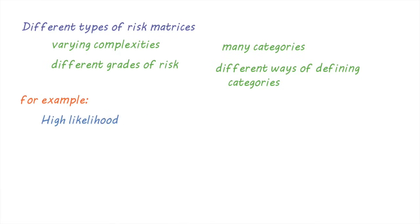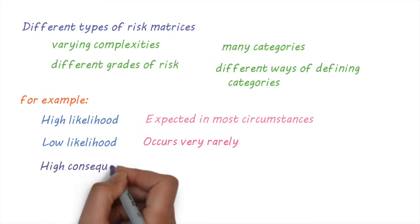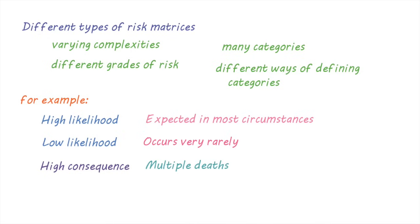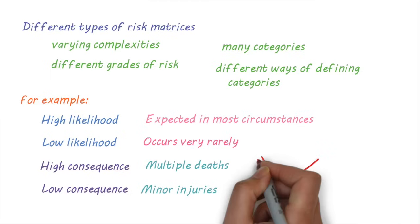For example, a high likelihood may mean that it's expected to occur in most circumstances, and a low likelihood may mean that it may occur only very rarely, such as once in 100 years. With consequence, a high consequence may mean multiple deaths and a low consequence may mean only minor injuries. So the risk matrix and the categories that are used can vary and therefore should be relevant to the situation and context in which the risk assessment is done.